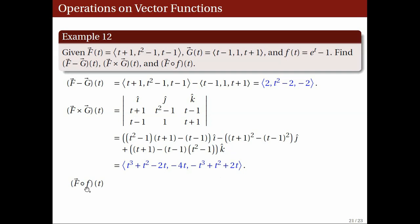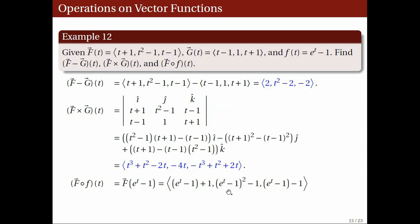The composition of big F and small f is just the value of big F at e to the t minus 1. So we plug in e to the t minus 1 into big F, obtaining: e to the t minus 1 plus 1, e to the t minus 1 squared minus 1, and e to the t minus 1 minus 1. After simplifying, this gives the vector with components e to the t, e to the 2t minus 2e to the t, and e to the t minus 2.